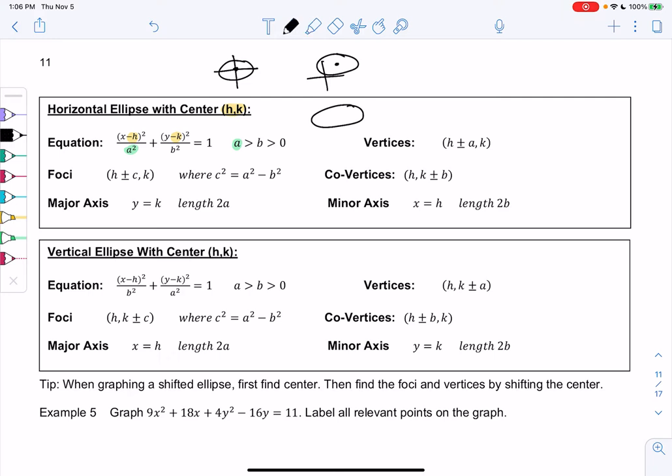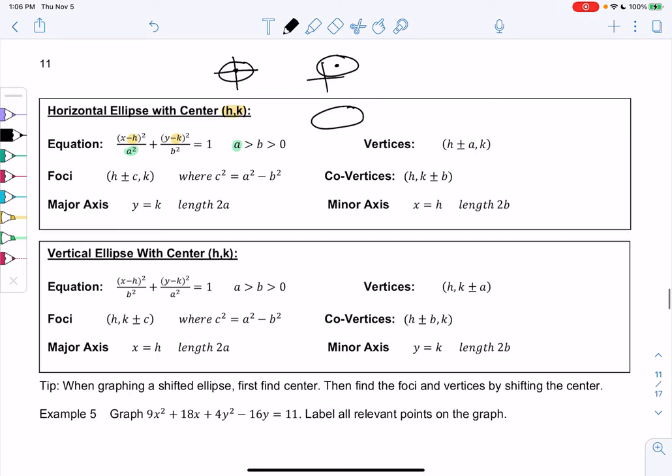Vertices are technically the same. If we're doing a horizontal one, our vertices were plus or minus A zero, and now they're just shifted by H and K. So I don't really use the formula H plus or minus A comma K. I plot A zero or I think about this value of A and then I shift it. Same with the foci. The foci would normally be plus or minus C zero, and they're just shifted by H and K. So H plus or minus C comma K.